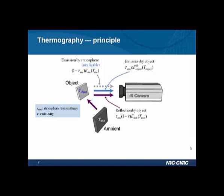After some mathematical operations, the camera can give us the equivalent blackbody radiation at the temperature of the object, related to the total emissivity detected. By matching this to the integration of Planck's law over the spectral range of the infrared camera, we can extract the temperature of the object. Importantly, the larger the emissivity, the more accurate the temperature measurement.